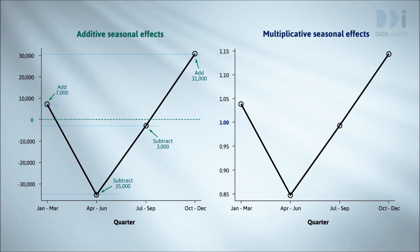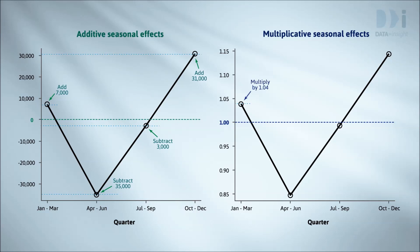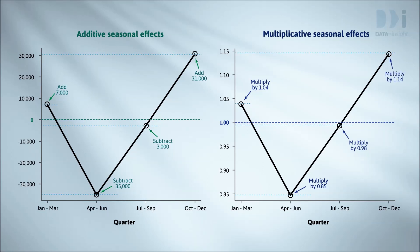Note the horizontal reference line at zero on the additive plot — adding zero makes no change. Whereas the horizontal line on the multiplicative plot is at one, because in a multiplicative world, multiplying by one makes no change. The multiplicative seasonal effects tell us that January to March figures will be about 1.04 times what you'd expect from the trend, or 4% above. April to June is about 0.85 times the trend value — 15% below. July to September is about 0.98 times, 2% below. And October to December is about 1.14 times the trend, 14% above.